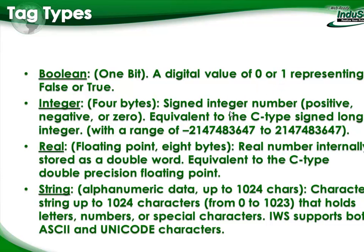An integer is four bytes — a signed integer number, positive, negative, or zero. They are equivalent to the C-type programming language signed long integer, with a range of negative 2.1 billion to positive 2.1 billion, so a good amount of storage. A real is a floating point with 8 bytes, stored internally as a double word — equivalent to the C-type double precision floating point — so you can store some very large numbers.